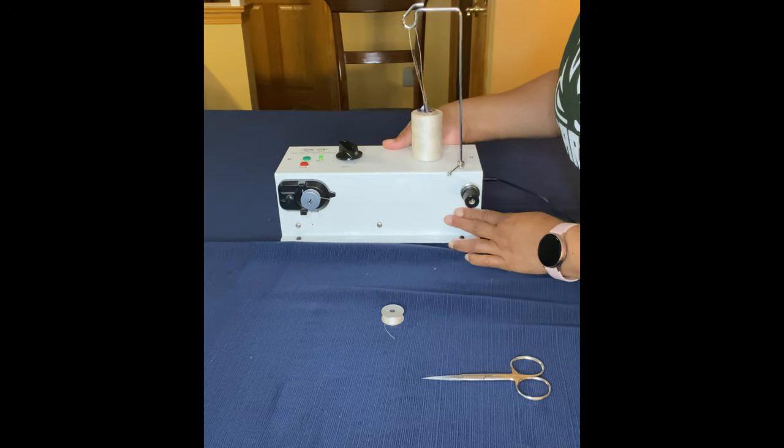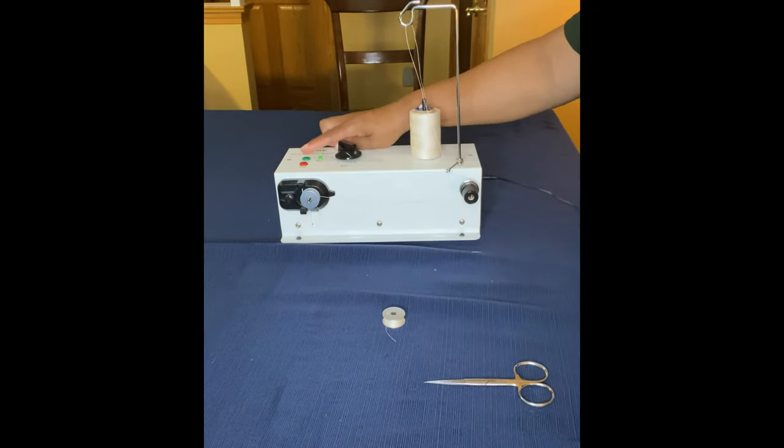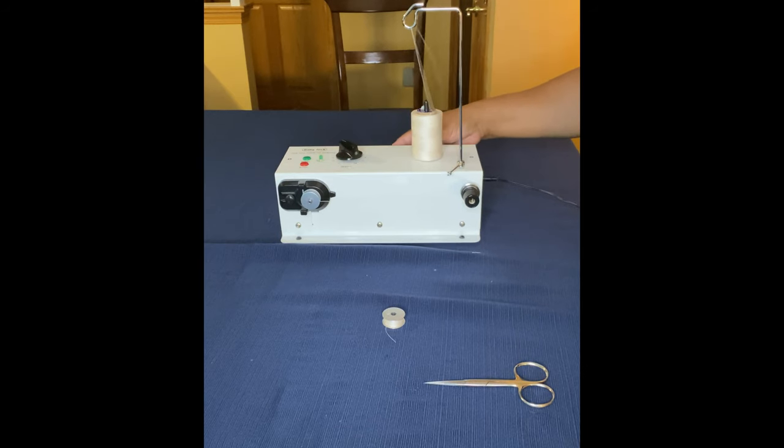Your green light should be on, and then just press the green button for start and your bobbin winder will start to wind. It will wind on these 15 class bobbins, and you can use other bobbin sizes on this winder too.